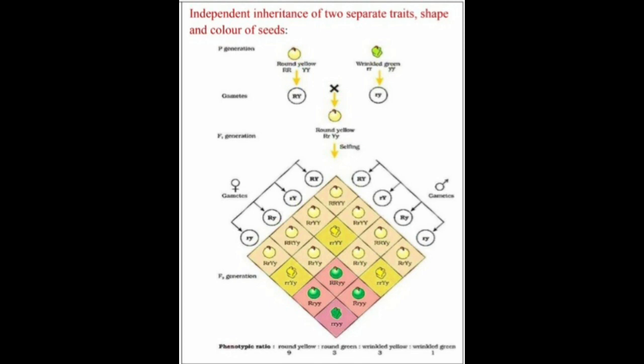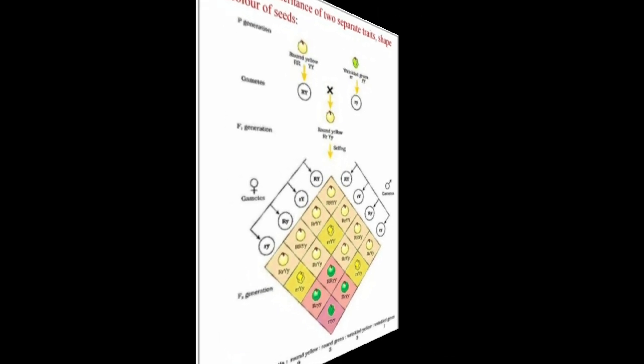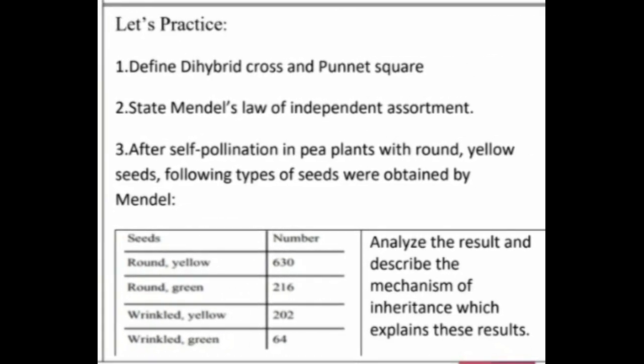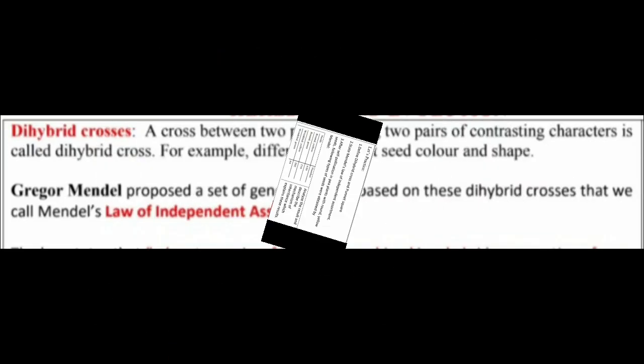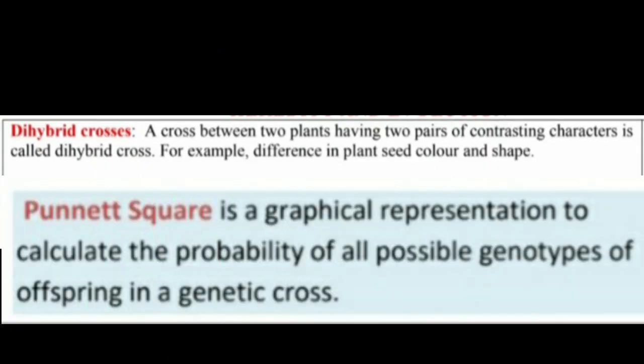Let us discuss some questions. Define dihybrid cross and Punnett square. A cross between two plants having two pairs of contrasting characters is called a dihybrid cross — for example, difference in plant seed color and shape. A Punnett square is a graphical representation to calculate the probability of all possible genotypes of offspring in a genetic cross.